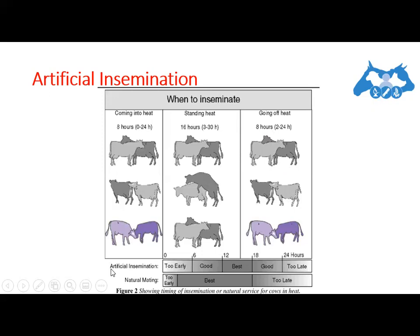At the bottom of this picture, a comparison is made between artificial insemination and natural mating timing during standing heat. If the animal is in heat, insemination in the first 8 hours is possible, but the best results are between 12 to 18 hours after the onset of standing heat. From 18 to 24 hours you can still get good results, but not the best. After 24 hours it is too late to inseminate.